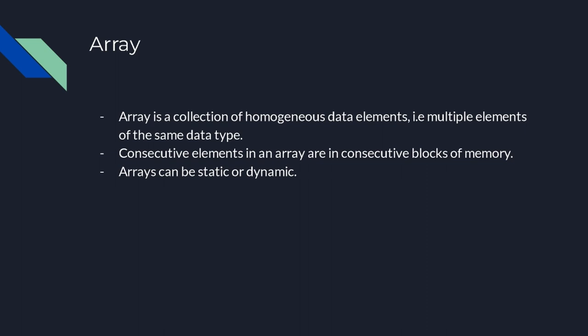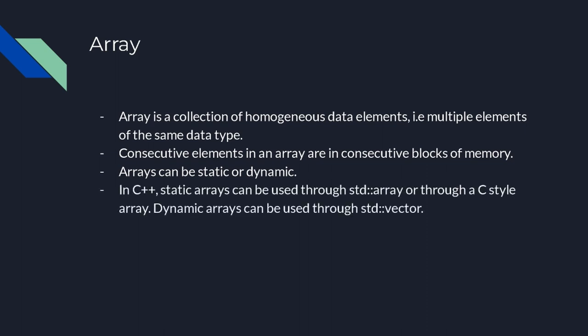With dynamic arrays, memory is allocated based on the actual size needed. So if you have 5 elements, you allocate only as much memory as those 5 elements require. With a static array you usually allocate more than needed and the rest is wasted memory. Static arrays can be used through std::array or a C-style array; dynamic arrays through std::vector.